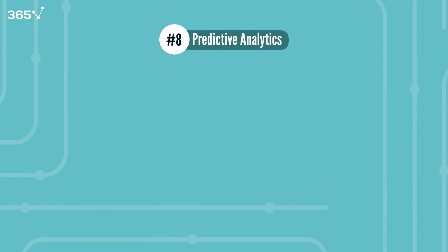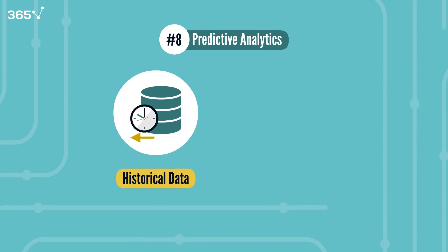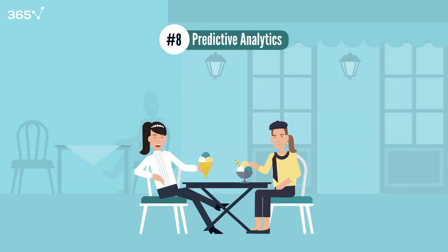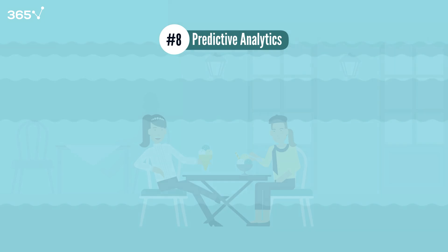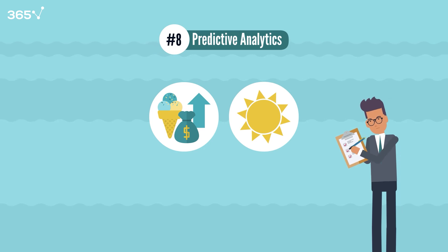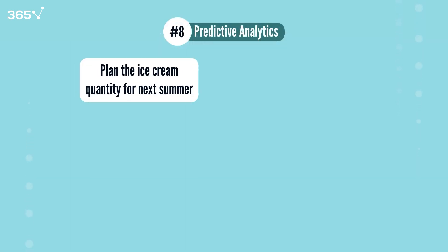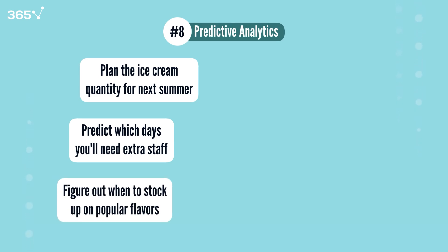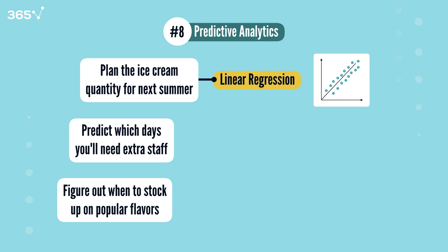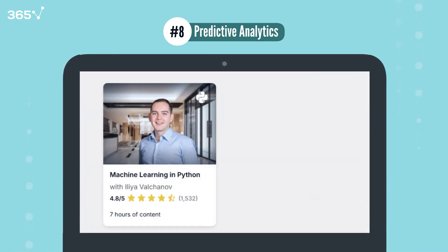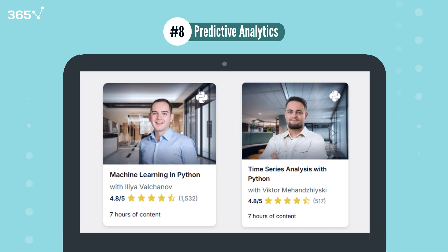Concept 8: Predictive Analytics. Predictive analytics is the use of historical data and statistical techniques to forecast future trends and outcomes. For example, if you own an ice cream shop and notice from past sales data that you sell more ice cream on sunny days and during summer months, you can estimate how much ice cream you'll need next summer, predict which days you'll need extra staff, and figure out when to stock up on popular flavors. Common techniques include linear regression, time series analysis, and machine learning models. Check out our machine learning in Python and time series analysis in Python courses to learn more.